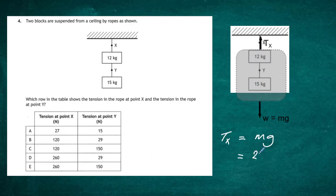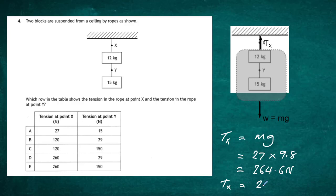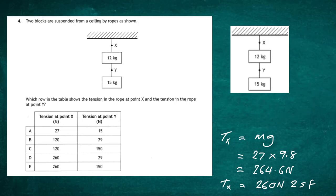The total mass is 27 kilograms, so TX = 27 × 9.8 = 264.6 newtons. Rounding to two significant figures, the tension at point X is 260 newtons. This narrows the answer to either D or E.